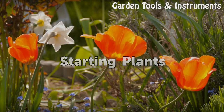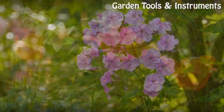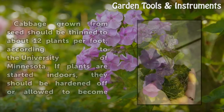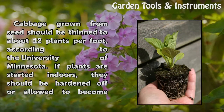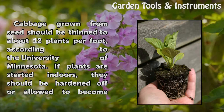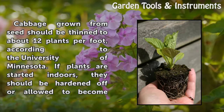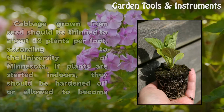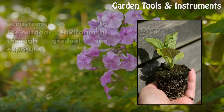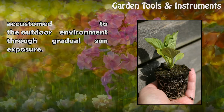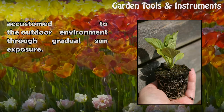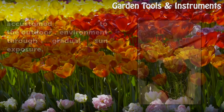Starting Plants. Cabbage grown from seed should be thinned to about 12 plants per foot, according to the University of Minnesota. If plants are started indoors, they should be hardened off or allowed to become accustomed to the outdoor environment through gradual sun exposure.